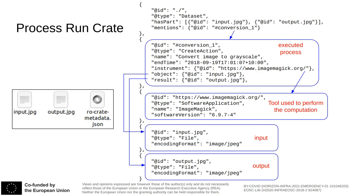Let's now take a look at the metadata of the Process-Run-Crate. Here, for simplicity, I have omitted the outermost structure with the context and graph and listed only the entities. The main entity is the CreateAction that represents the executed process, in this case an image conversion. The instrument property points to a SoftwareApplication entity representing the tool used to perform the conversion, in this case ImageMagick. Finally, object and result point respectively to the inputs consumed by the process and to the outputs it produced. The profile also specifies how to represent other properties of the run, such as the agent that started it or whether an error occurred.